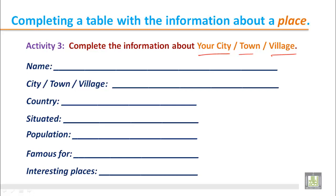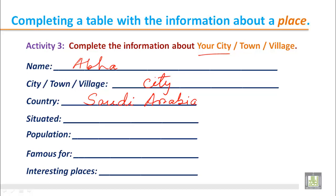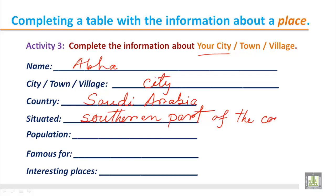For example, the name of my city is Abha, so we write 'Abha.' It is a city. The country is Saudi Arabia. For 'situated,' where is it exactly? It can be in the center, the northern part, or the southern part of the country. Abha is situated in the southern part of Saudi Arabia, so we write 'southern part of the country.'